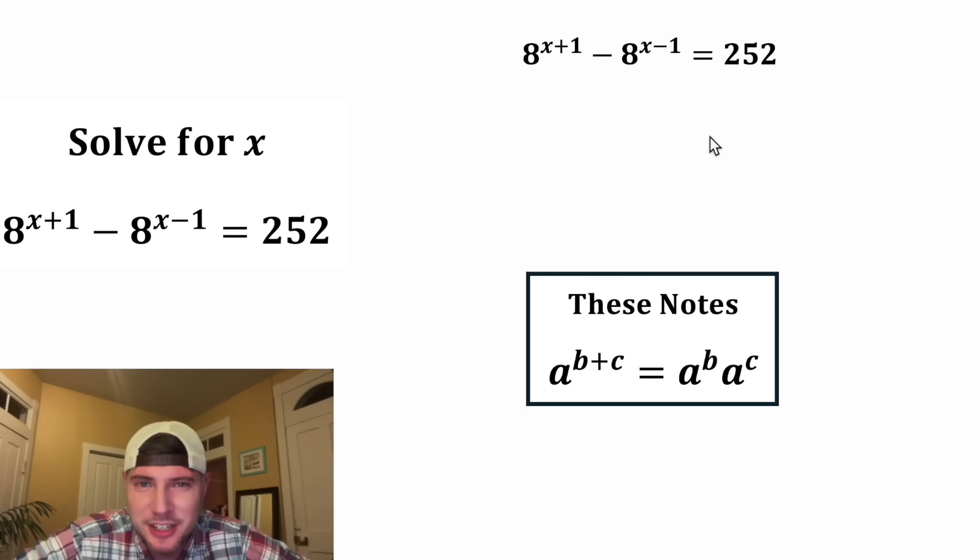For the first step, let's use these notes here. 8 to the b plus c equals 8 to the b times 8 to the c. So 8 to the x plus 1 will equal 8 to the x times 8 to the 1.